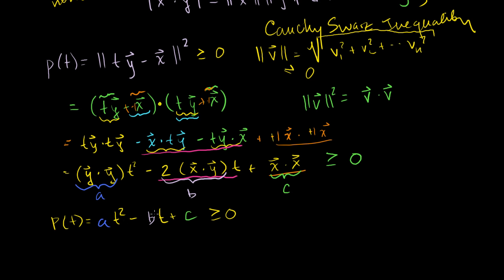Let me evaluate our function at t = b/(2a). I can do this because a = y · y, and since y is a non-zero vector, a is non-zero — in fact it's positive. So we won't be dividing by zero.